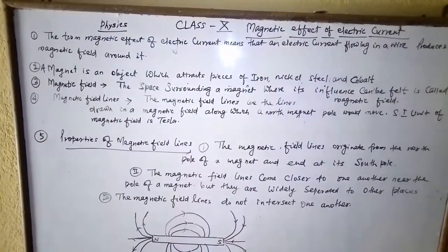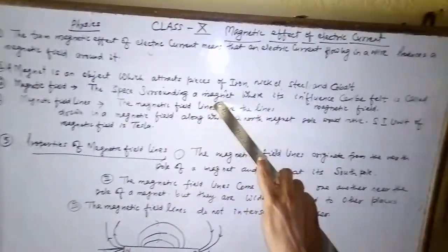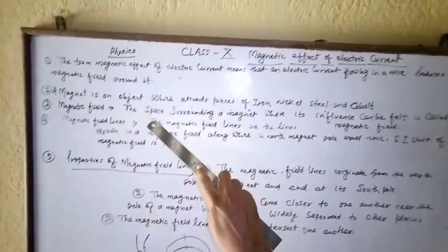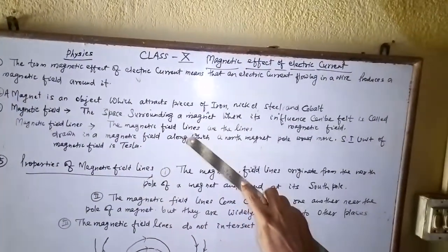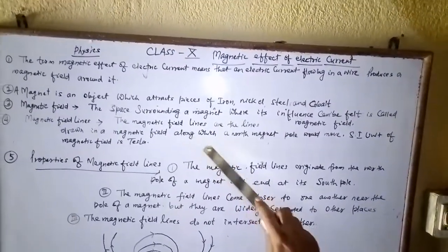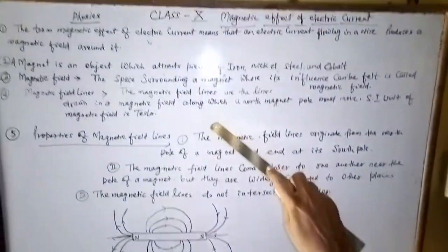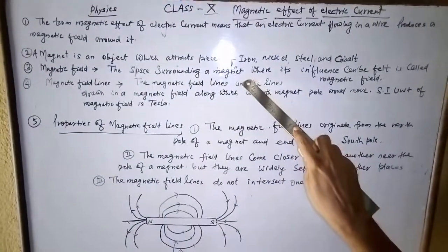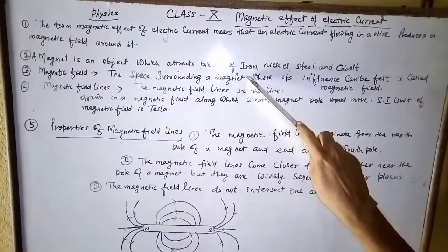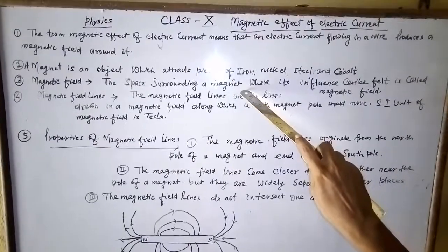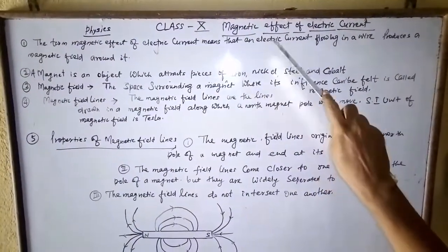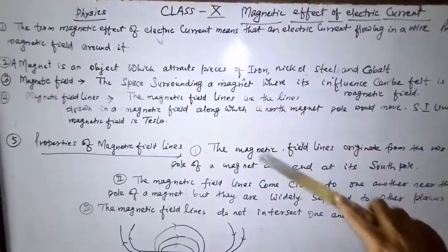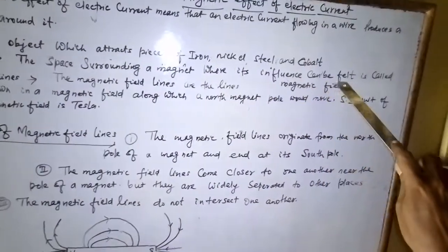Now, magnetic field. The space or region surrounding a magnet where its influence can be felt is called magnetic field. Suppose you have a magnet on your reading table and you sprinkle some iron filings near the magnet — after some time, the iron filings are attracted towards the magnet up to a certain distance. Beyond that distance, there is no attraction. That region around the magnet where its influence can be felt is called magnetic field.